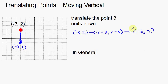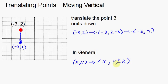So in general, if I want to move vertically, I'm going to take my x, y coordinates, and I'm going to leave the x alone, but I'm going to take the y coordinate and add or subtract some number — let's call it k. If I add some number, I'm going to move up. If I subtract some number, I'm going to move down, just like in this example. So that's what this looks like in general: I take a point, I leave the x coordinate alone, but I take the y coordinate and either add or subtract some number to it. That is translating points, either moving them vertically or moving them horizontally.